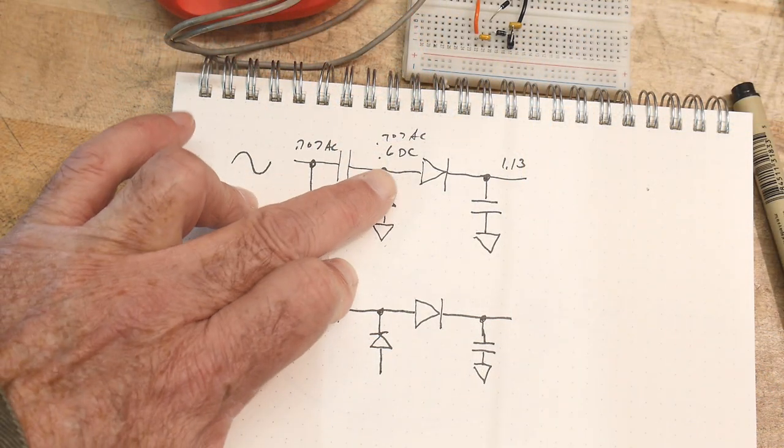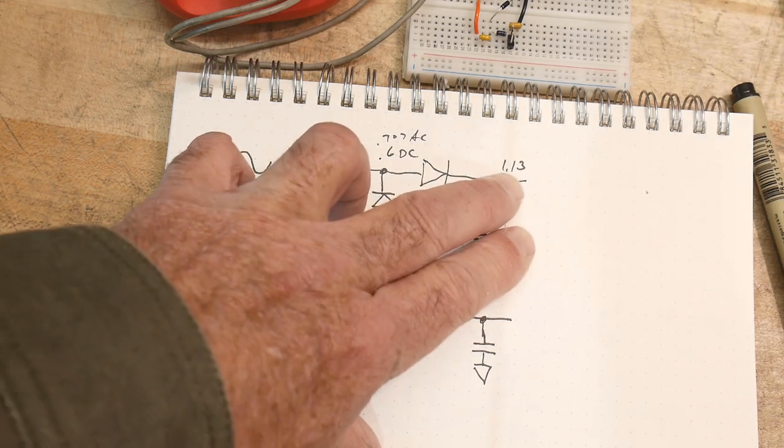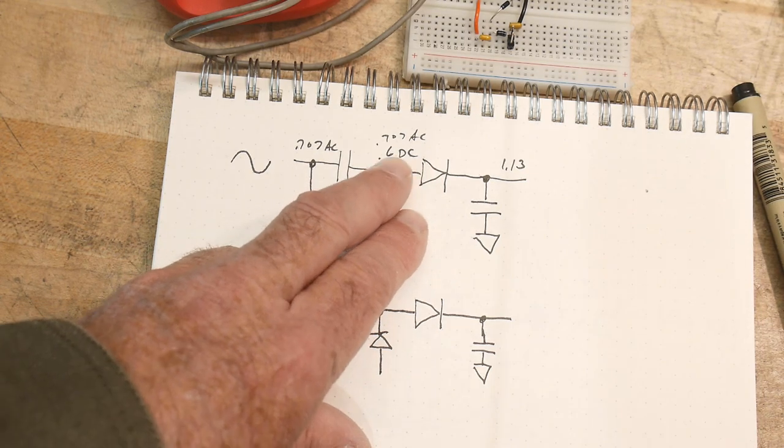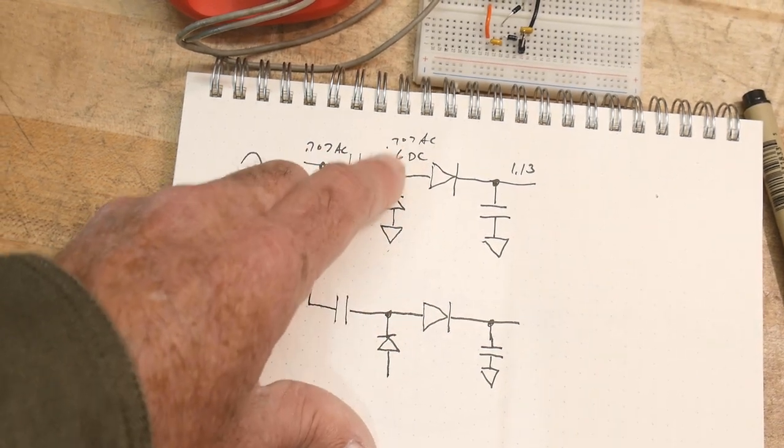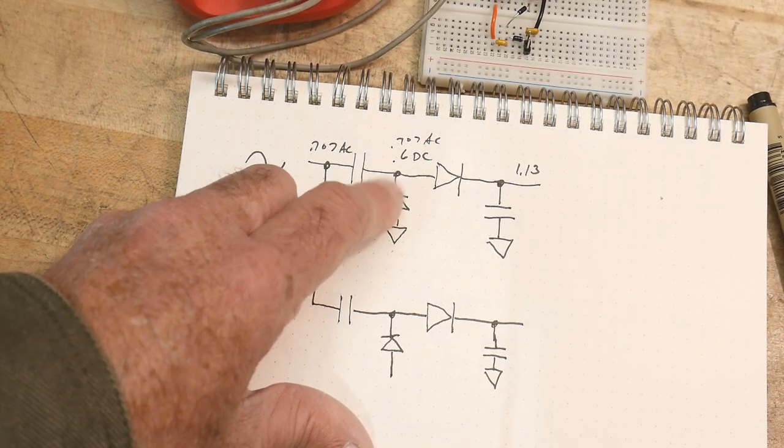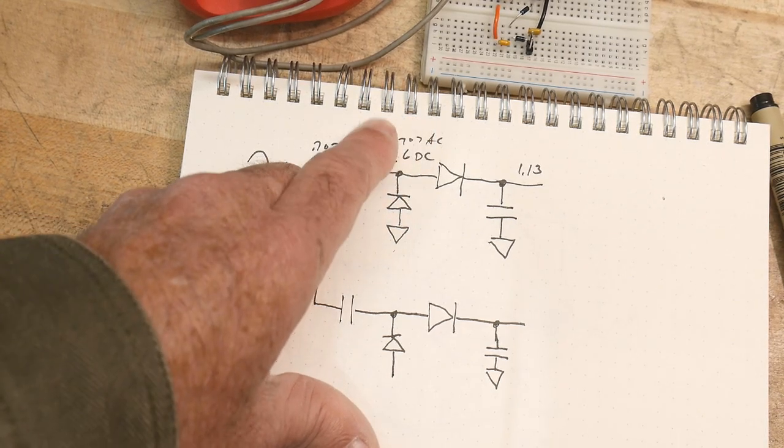All right, and so we have 1.13 volts coming out here, and that's due to the fact that we have 1 volt peak-to-peak going here, so we have actually 1 volt available. We're pushing that up by 0.6 volts, so we actually have 1.6 volts at the crest.